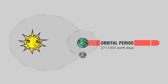So our year is 271.1307 Earth days long — a super awkward number. Wouldn't it be great if it just happened to be a whole number instead? We could just change it, but that would alter the astronomical facts of the universes we've created thus far. So here's an idea: how about we vary the rotation rate of our planet about its axis, i.e. its day length, such that a whole number of local days occur in the year?